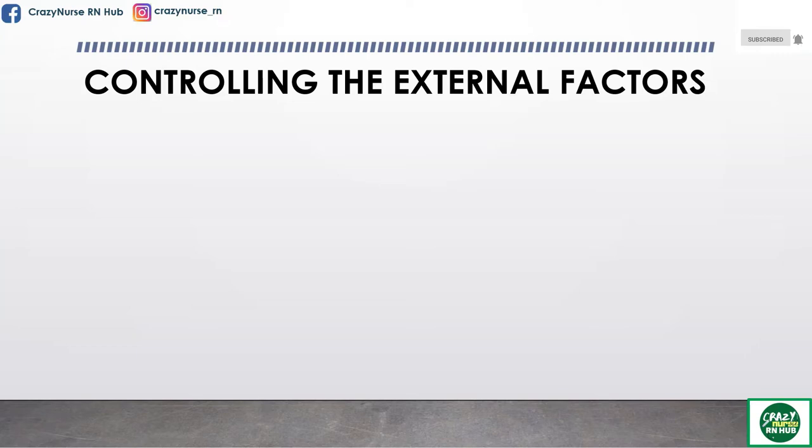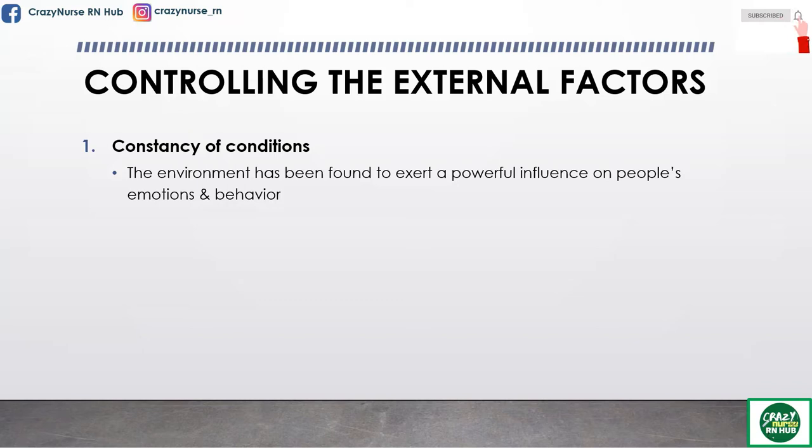Now let's proceed to controlling the external factors. The researcher's aim in controlling external factors is to maintain constancy of conditions. One condition, the environment, has been found to exert a powerful influence on people's emotions and behavior. To maintain constancy of the environment, the researcher needs to pay attention to the environmental context within which the study is to be conducted.